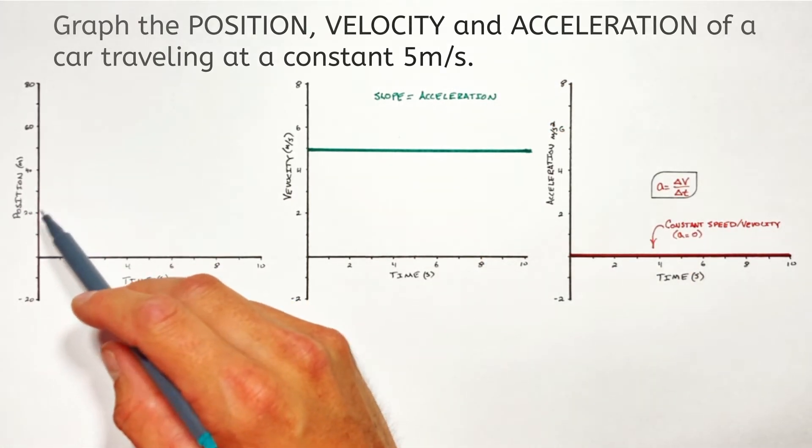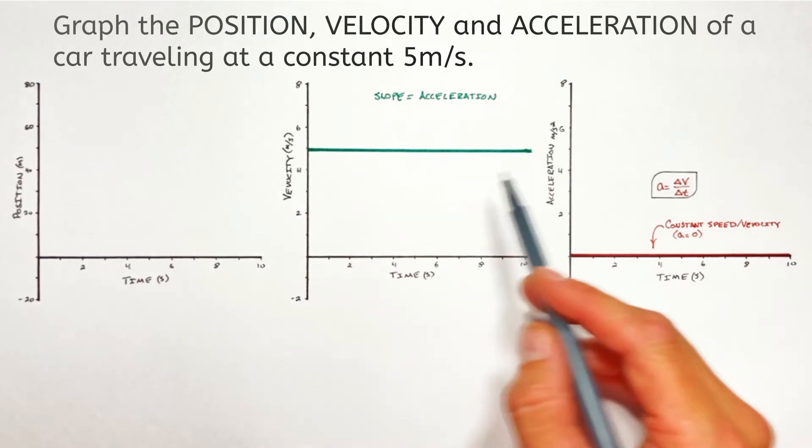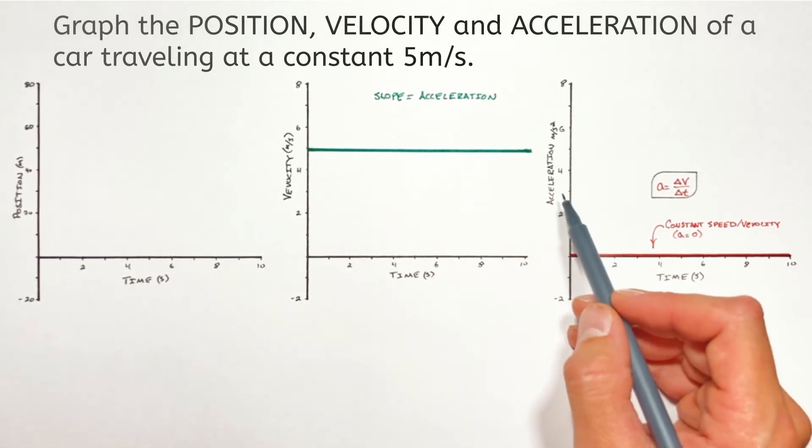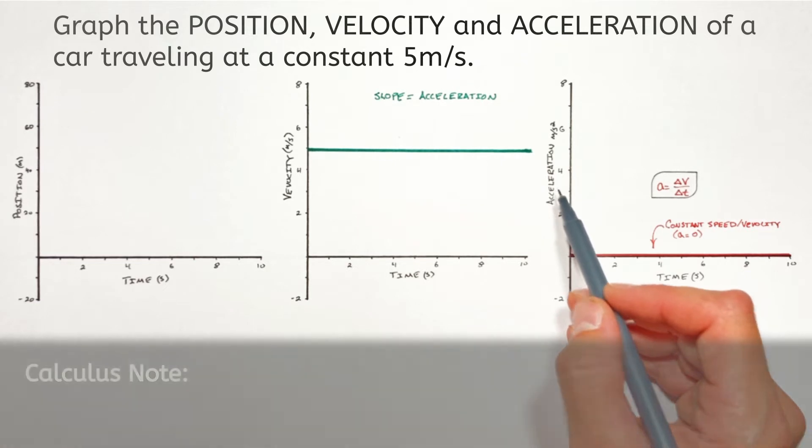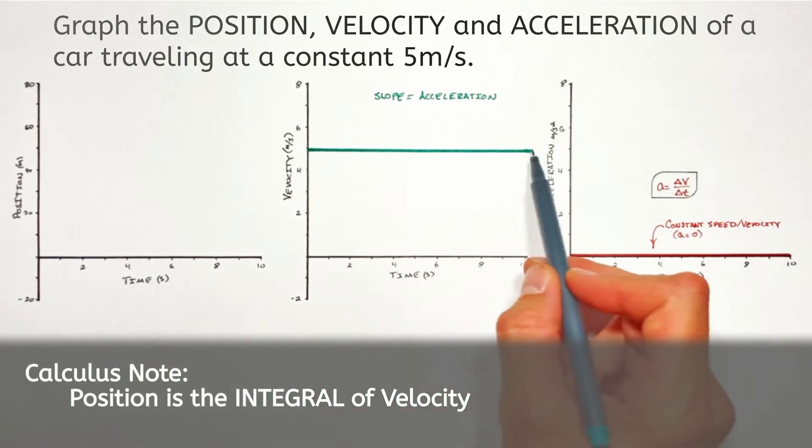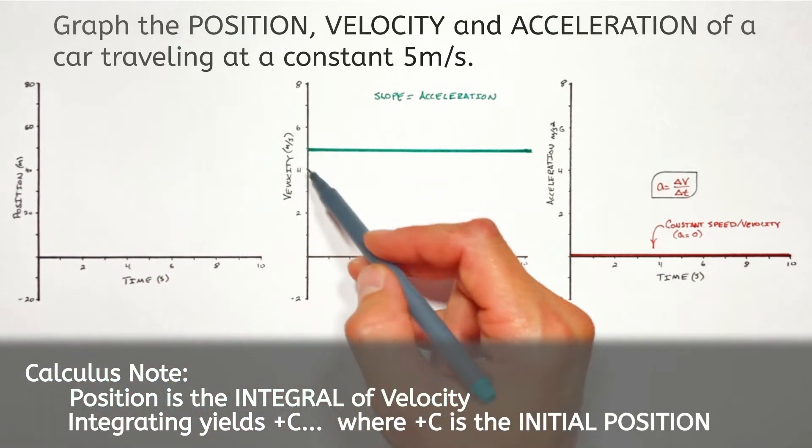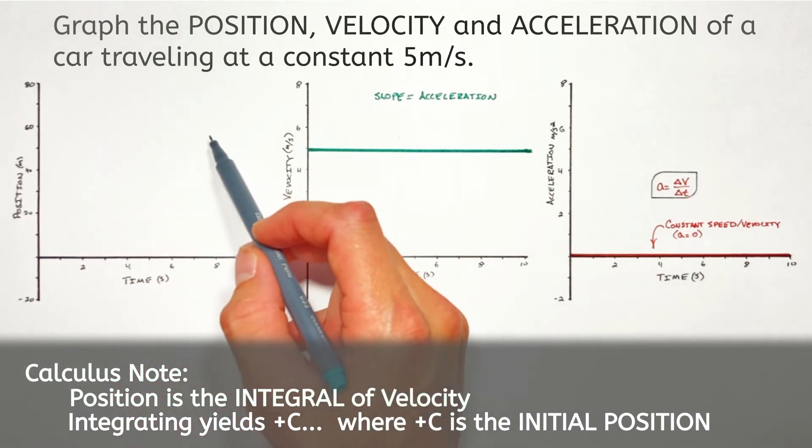Now moving on to position. See, the relationship between position and velocity is very similar to the relationship between velocity and acceleration. In the case of velocity, it was acceleration that dictated how quickly the velocity changed. In the case of position, it's velocity that dictates how quickly position changes.